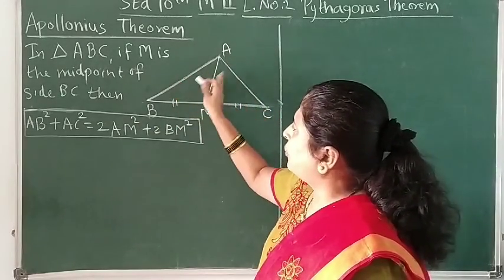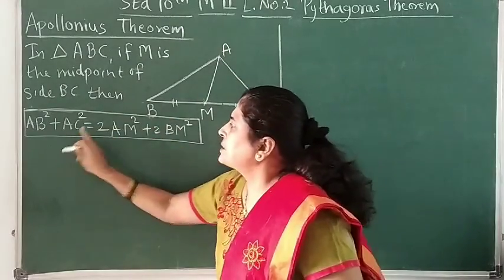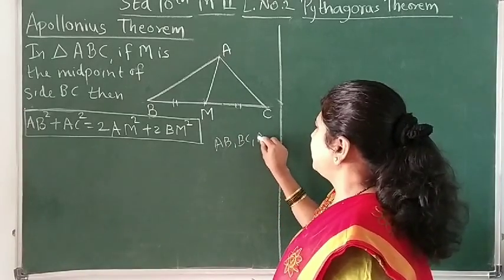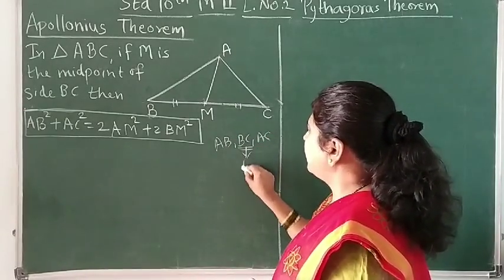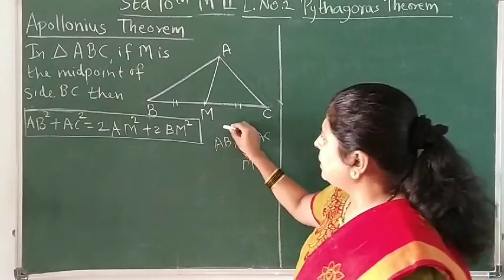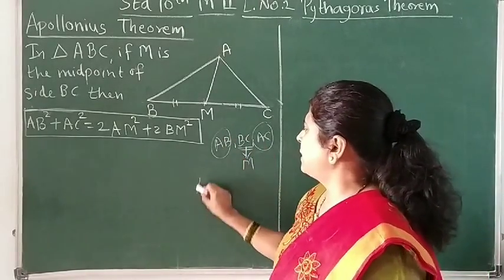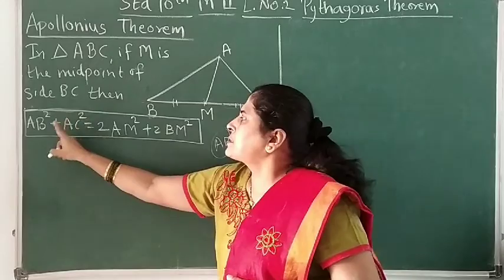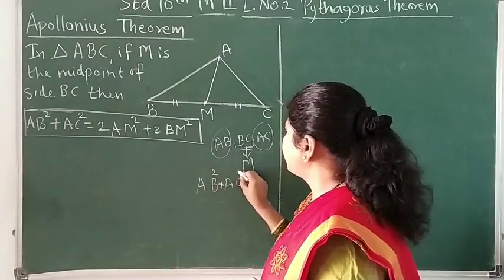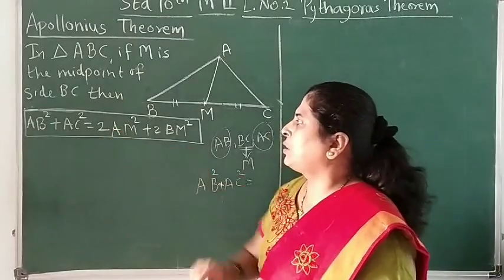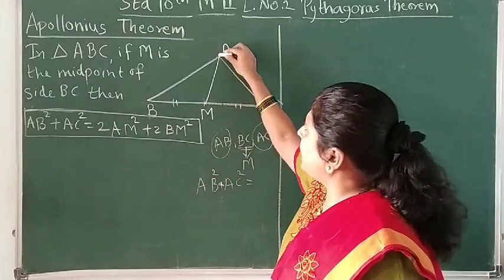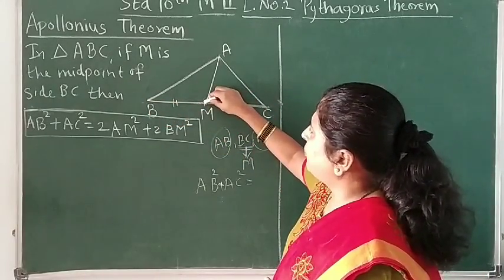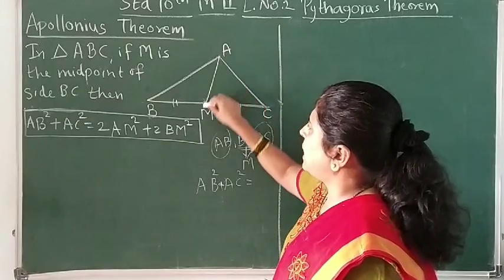As per Apollonius, AB square plus AC square — a triangle has three sides: AB, BC, and AC. Suppose we have taken the midpoint of side BC, then the remaining two sides are AB and AC. If we take the sum of the squares of those two remaining sides, that is equal to 2 times AM square. Now, A is the vertex opposite to side BC, so if you join this midpoint of BC with A, this AM is your median.